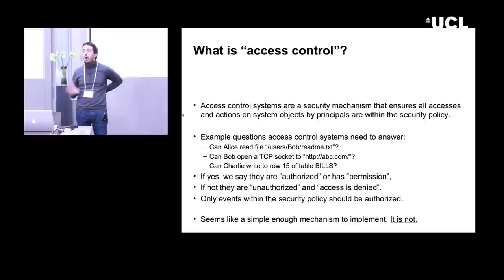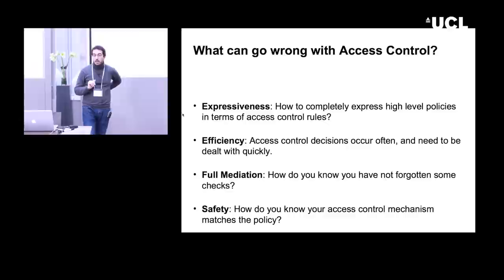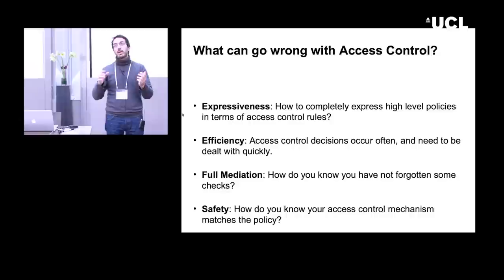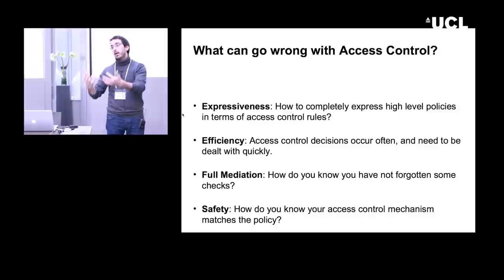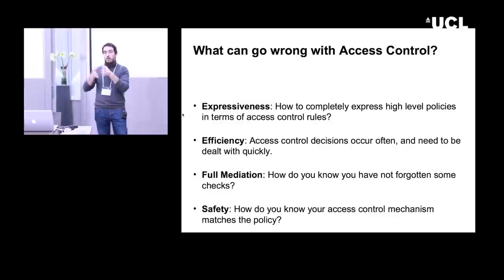Access control seems like a straightforward problem — but really it is not. We're going to spend an hour and a half looking at why it is actually not just a hard problem but pretty much an impossible problem. The first problem is expressiveness. Because access control systems are security systems, they need to be small, fast, and simple. So how can you express extremely complex policies? For example: access to a particular file is only allowed if George is trying to access it and Frank happens to be in his office. That's a perfectly valid policy goal, but you cannot express it in a Unix or Windows access control system. The access control system limits the kinds of policies you can implement.